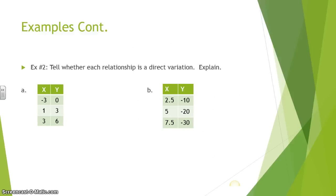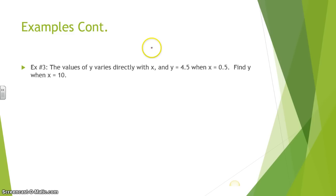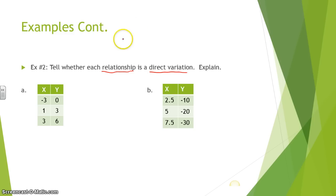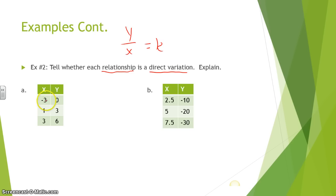The next example here, two, we are given two tables, and they want us to tell whether each relationship is a direct variation and explain. So what we're going to do to help us determine if this is a relation with direct variation is we're going to look at the form of y divided by x to get my k. When we divide y and x to each, we should have a constant number that we're getting an answer for. So let's look at this and see. If we do 0 divided by negative 3, that's going to give me 0.